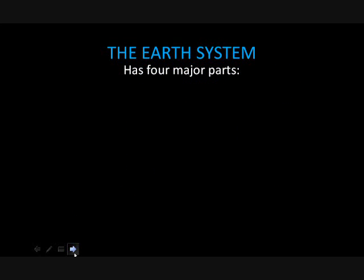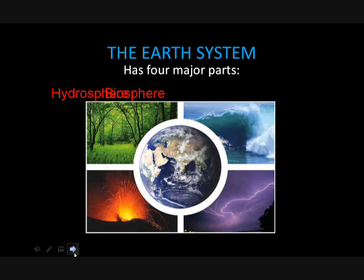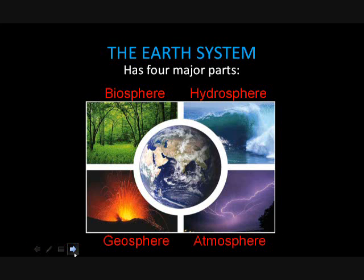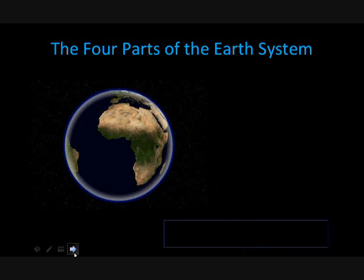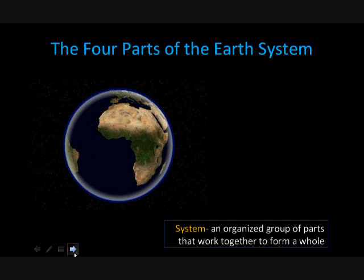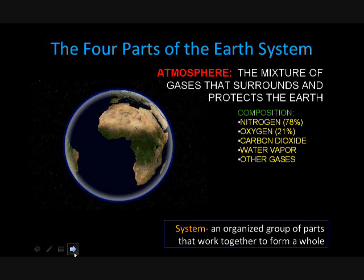The earth system has four major parts: the biosphere, the hydrosphere, the geosphere, and the atmosphere. The atmosphere is the mixture of gases that surrounds and protects the earth. Its composition is nitrogen at around 78 percent, oxygen at around 21 percent, and carbon dioxide, water vapor, and other gases.